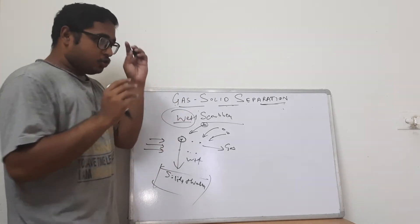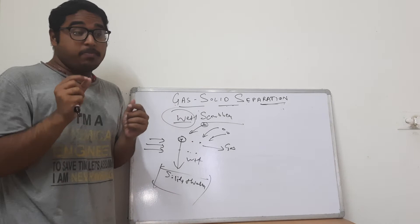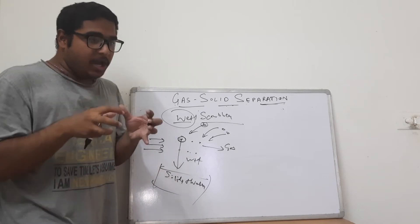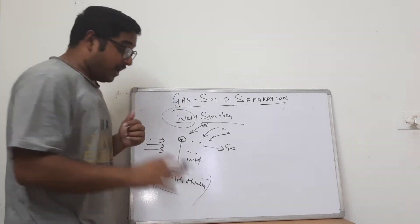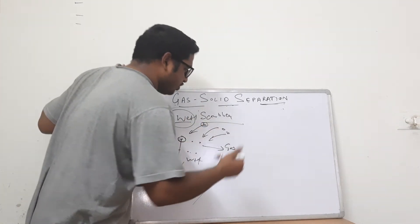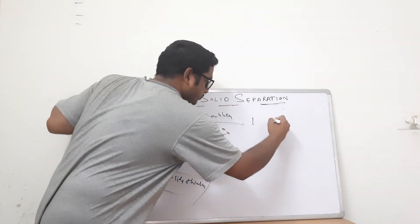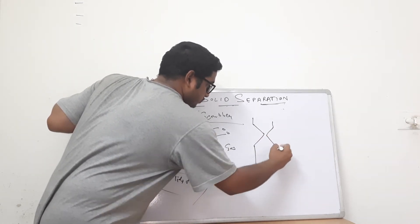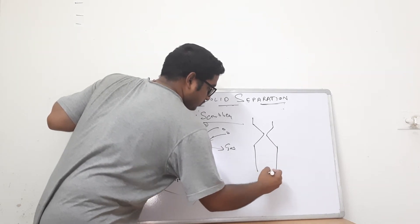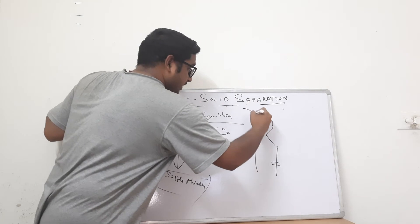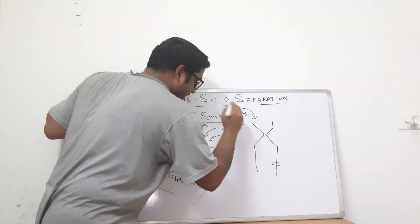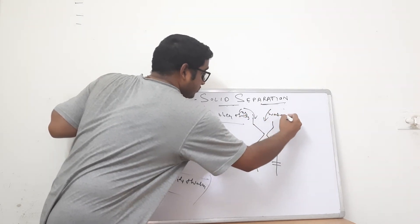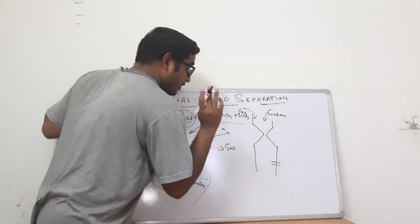Popularly in the industry, there is an equipment named the venturi scrubber — a wet venturi scrubber — by which we separate gas and solid when dealing with finer solid particles. Let us look at its structure.